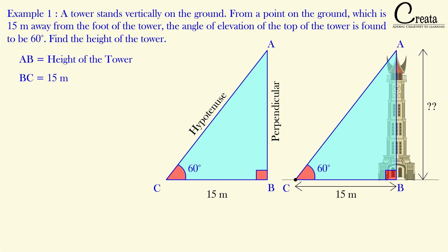We have to find the perpendicular, which is AB. BC (base) is given, and angle C (theta) is given as 60 degrees. Base is given, angle theta is given, and we have to find the perpendicular. The trigonometric ratio linking perpendicular and base is tan theta. Tan theta equals perpendicular over base. Perpendicular is missing, base is given, theta is given — so let's put in the values.